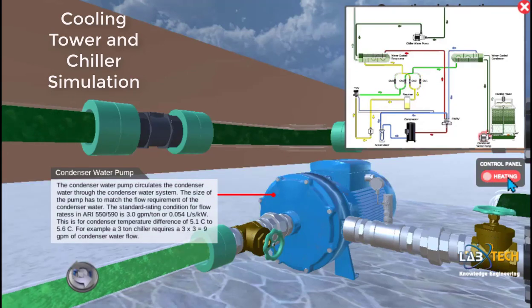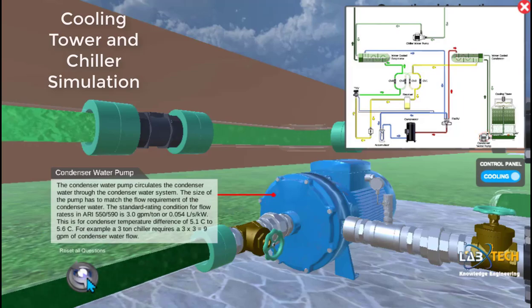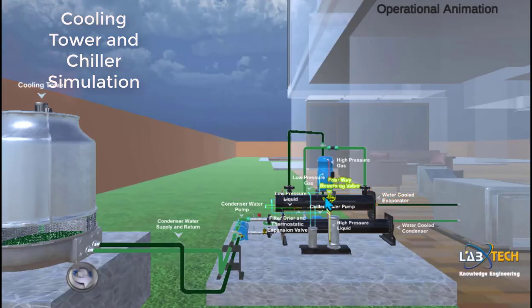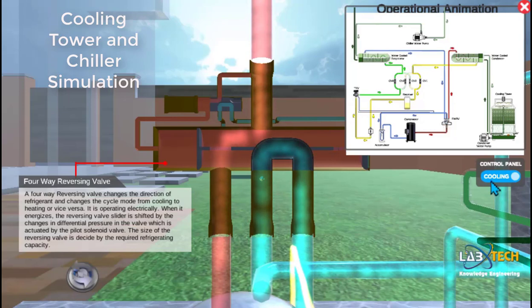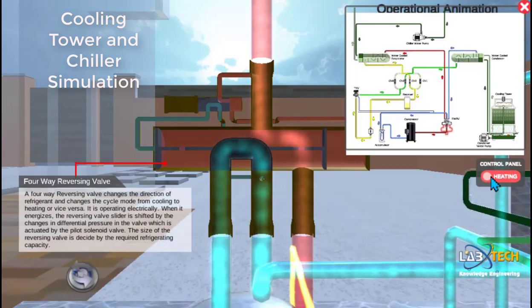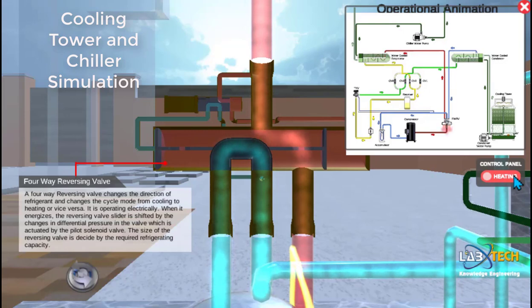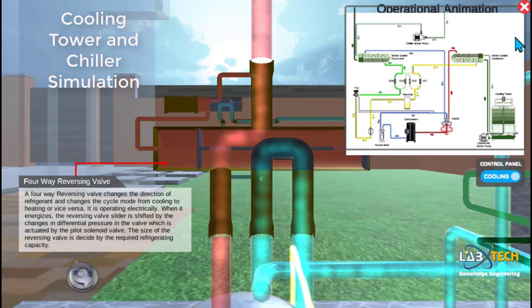So here we have like a system for a large house or a small commercial application, and we're able to look at the different parts such as the water pumps or the cooling tower, or my favorite, the four-way reversing valve. This is the part that actually causes the reverse cycle to happen. And it's interesting to see the animation of this in detail, and then also when you zoom out to see how this works for the heating and the cooling.